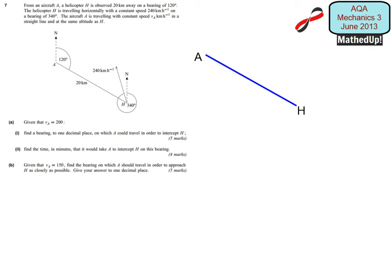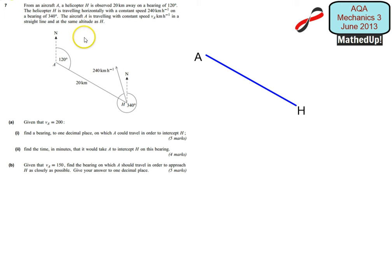This is question 7 from the AQA Mechanics 3 June 2013 exam paper. From an aircraft A, a helicopter H is observed 20 kilometres away on a bearing of 120 degrees. The helicopter H is travelling horizontally with a speed of 240 kilometres per hour on a bearing of 340 degrees. The aircraft A is travelling with constant speed VA kilometres per hour in a straight line and at the same altitude as H.